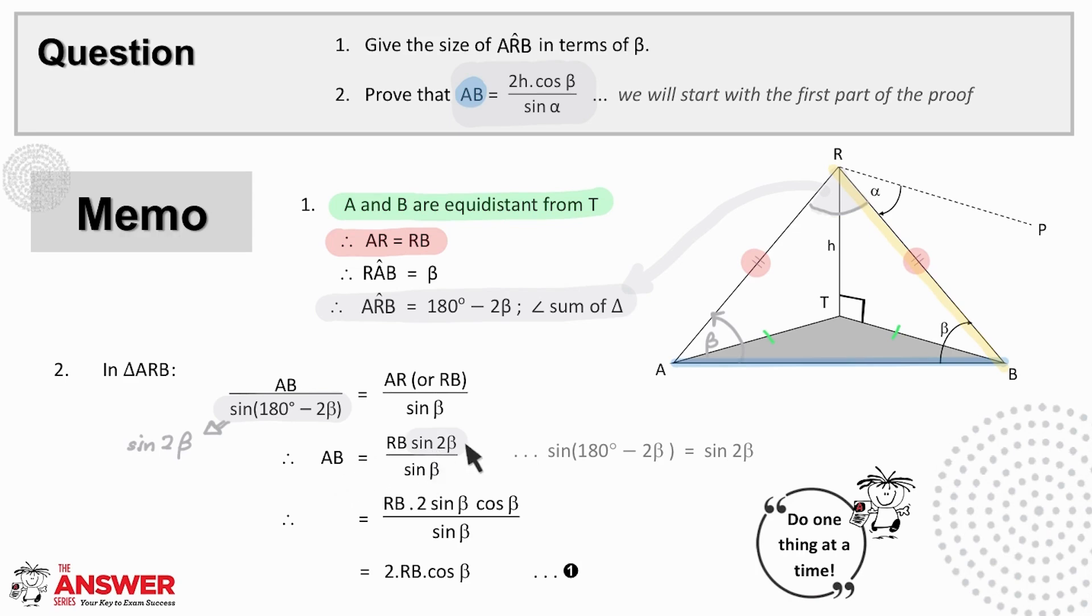If you recognize the double angle at this point, then go ahead and expand and simplify. If not, then be guided by what you have to prove. And hopefully this will spark the idea to expand the double angle as what we need to prove only contains single angles.